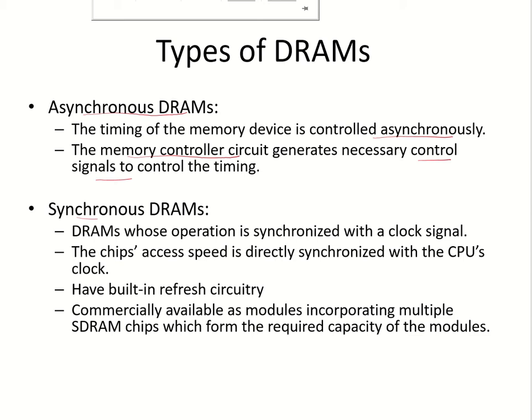Next we have the synchronous DRAMs. Here the operations are synchronized with the clock signals, so the access speed of the chip is directly synchronized with the clock of the processor. These have a built-in refresh circuitry and are commercially available as modules, with each module having multiple SDRAM chips depending upon the capacity required.